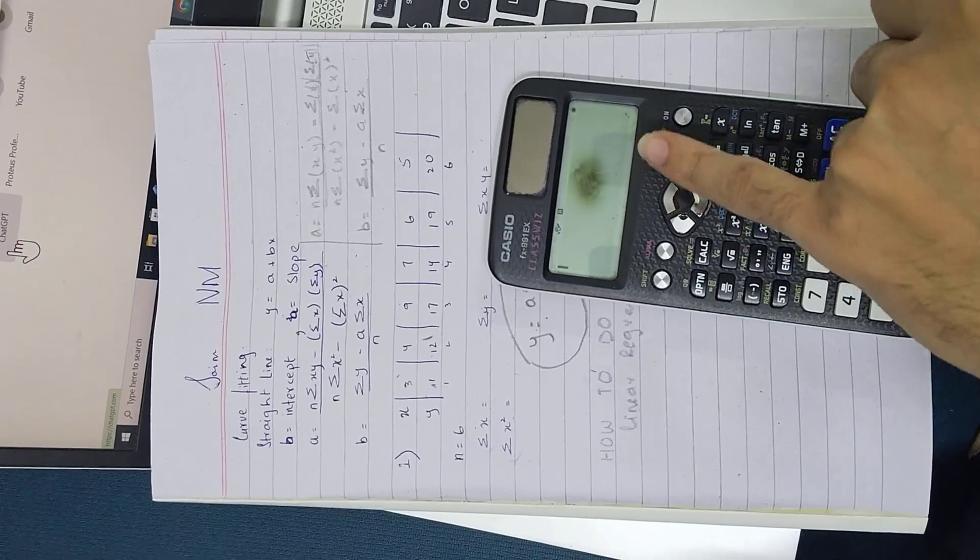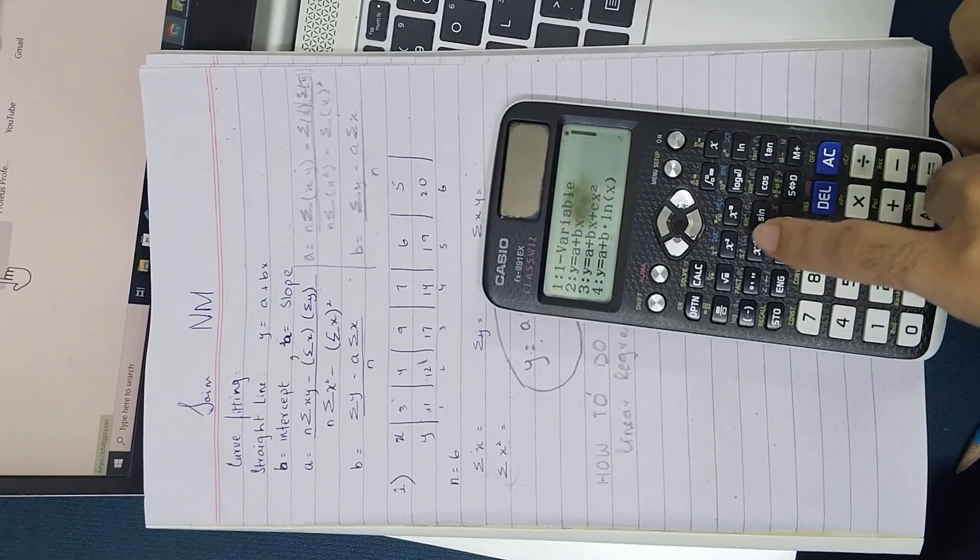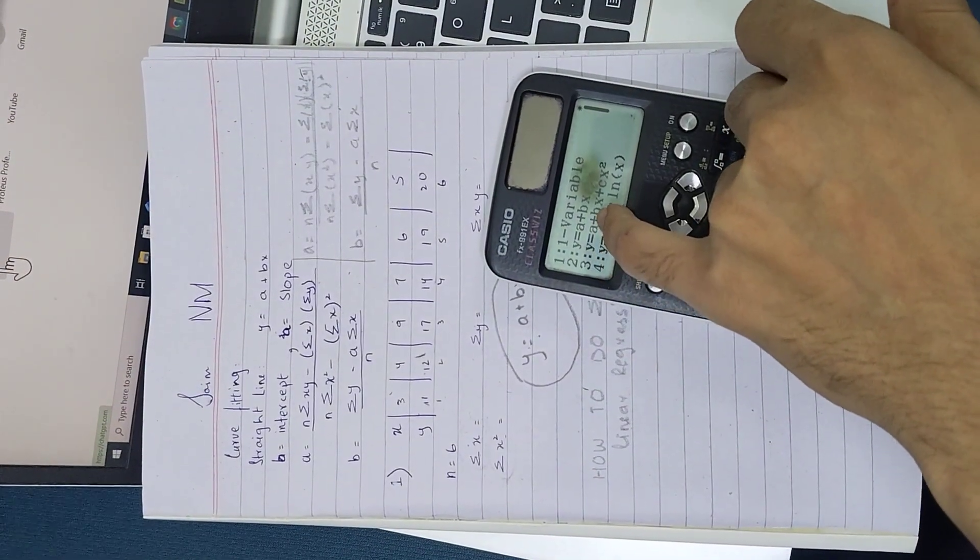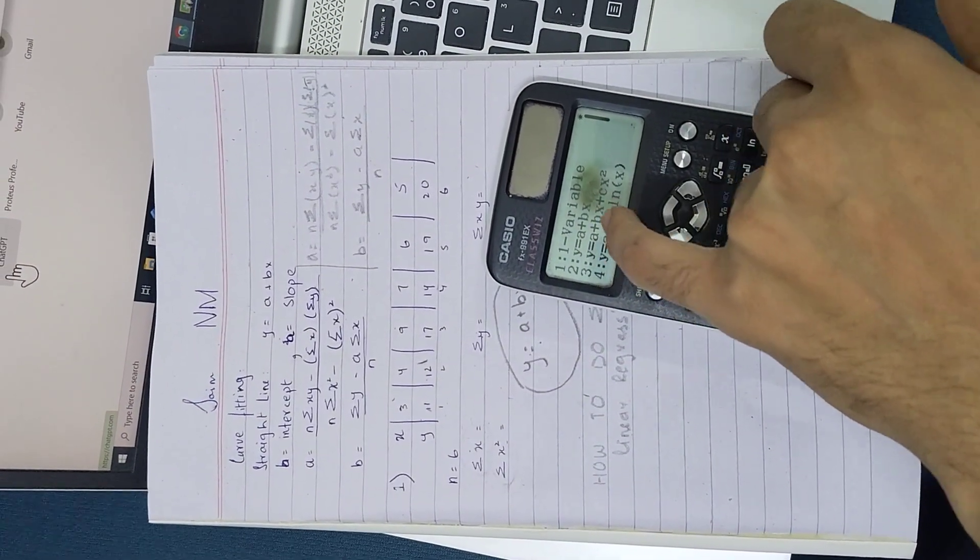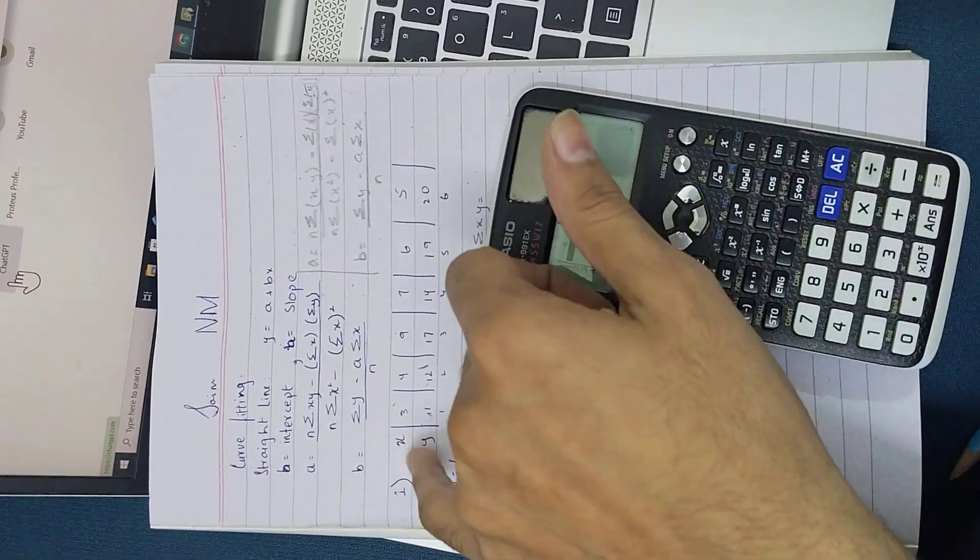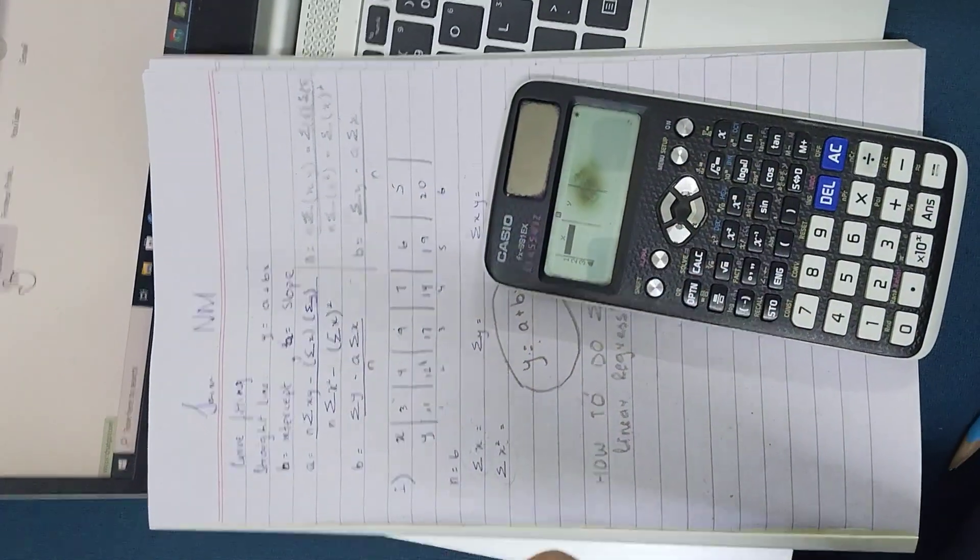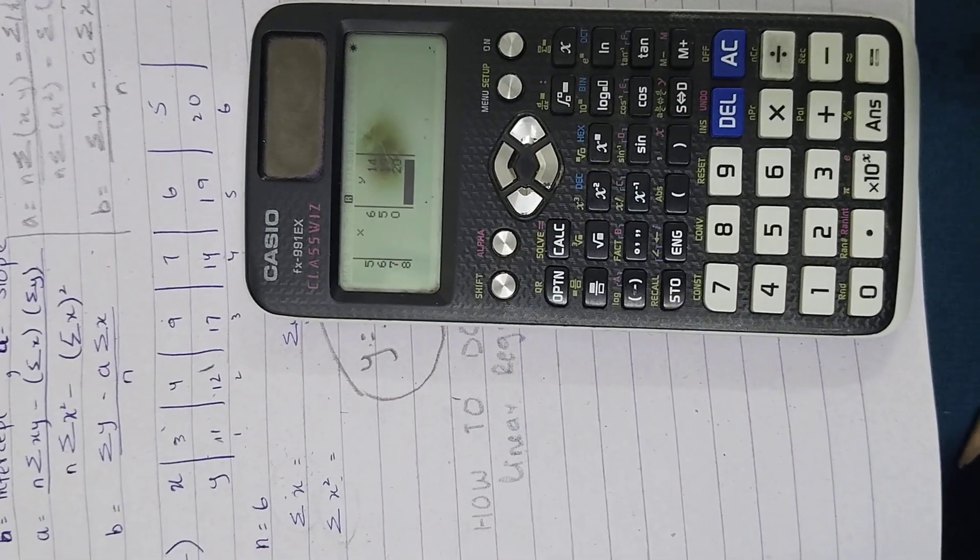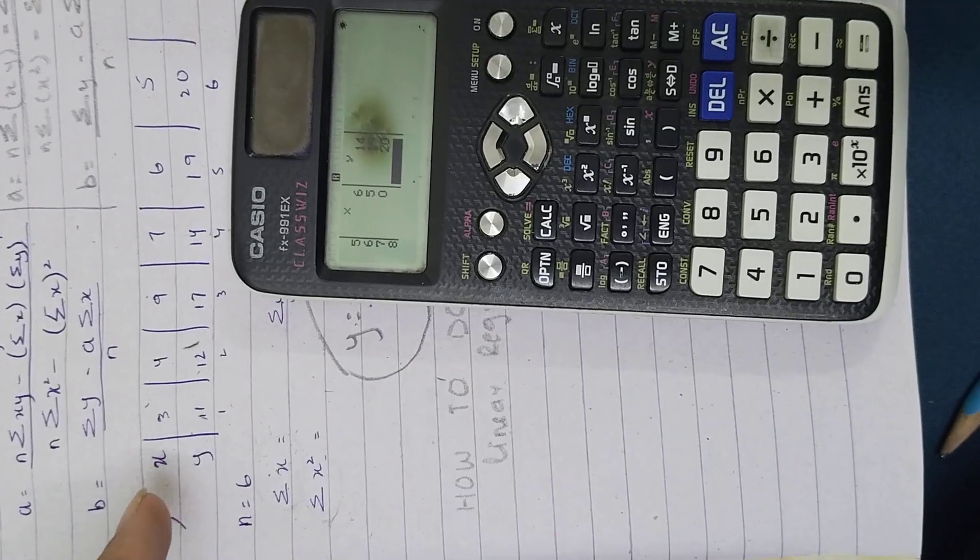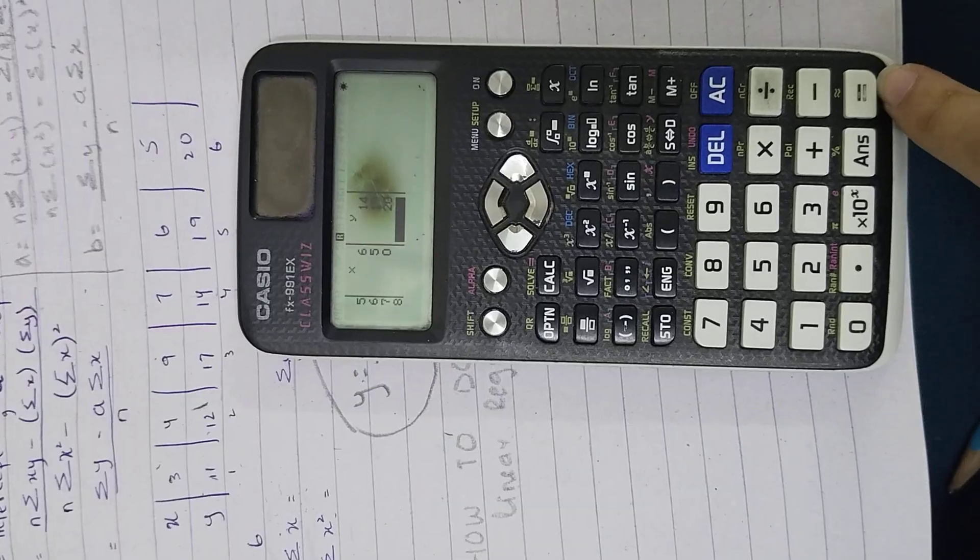First of all, you have to press this and 6, and after that you will see the straight line formula. Press 2 and this is the table, and you have to just fit this table here. My table consists of X and Y, so I just fit this into my calculator.